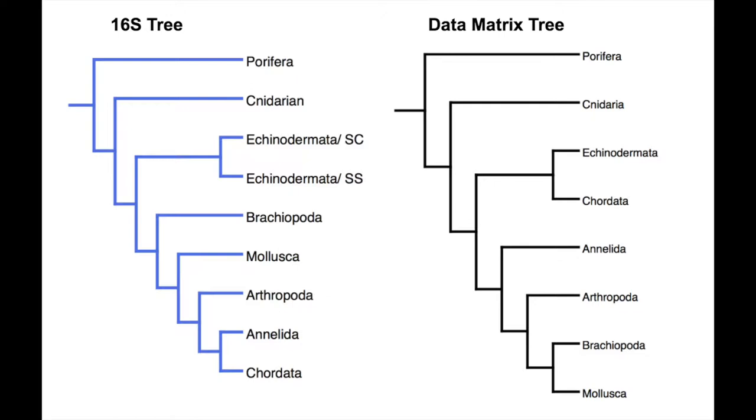The 16S tree was built using genetic information of eight different species. In the case of both trees, the outgroup was Porphyra, and the species that Brachiopoda is most closely related to was Mollusca and Arthropoda.